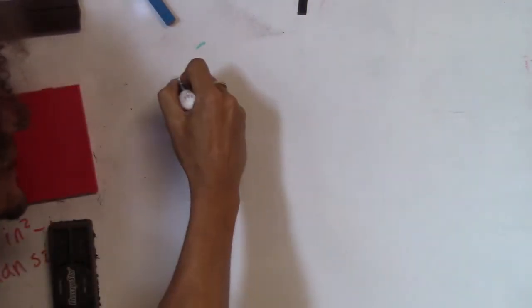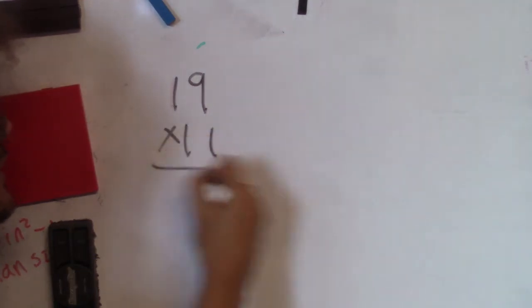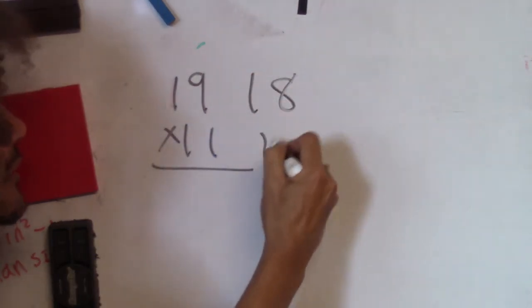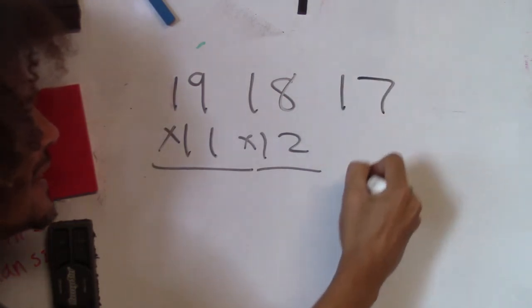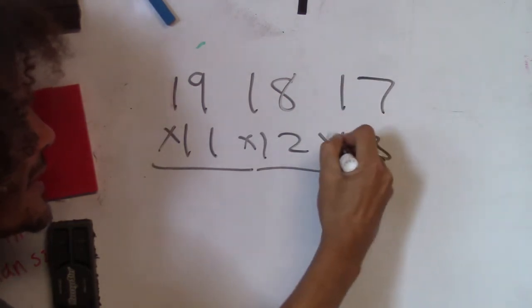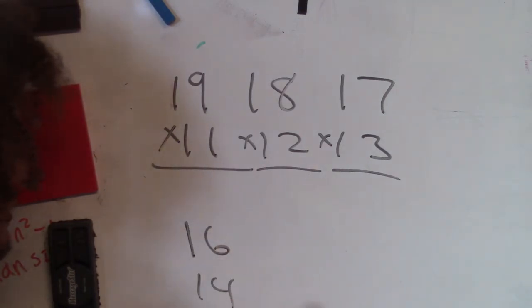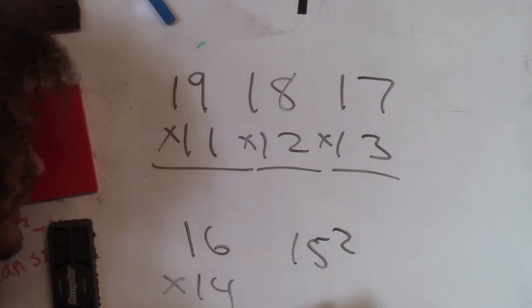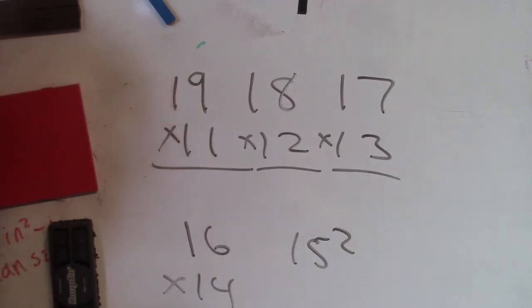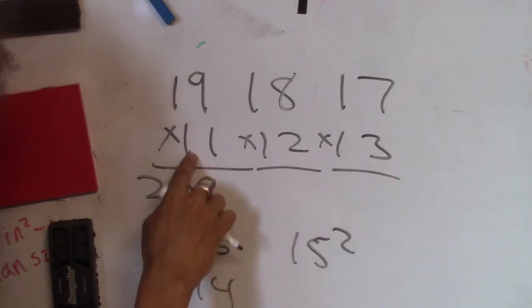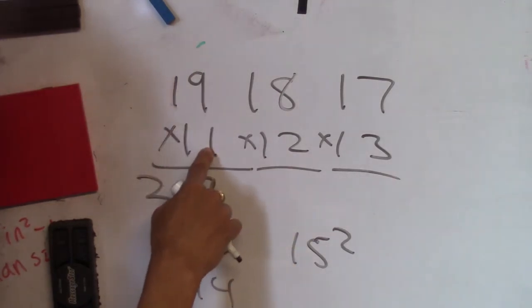What's 19 times 11? What's 18 times 12? What's 17 times 13? What's 16 times 14? These are all the easy ones, and then of course 15 squared — 15 times 15. What's 11 times 19? Or 19 times 11?